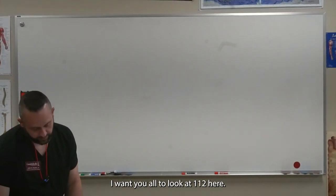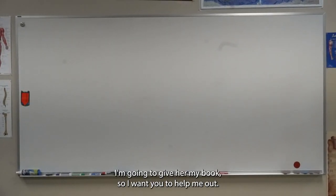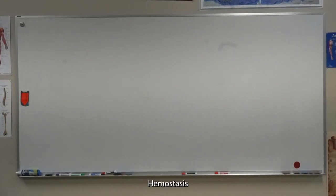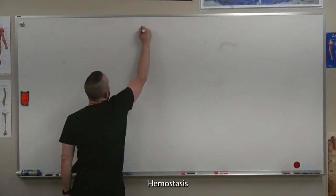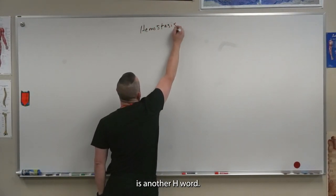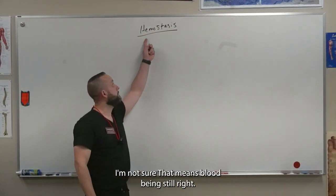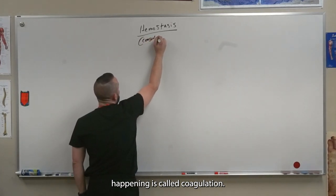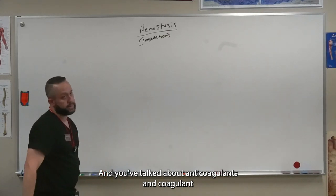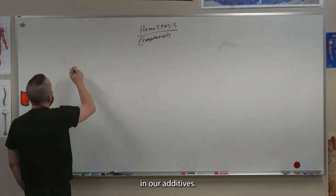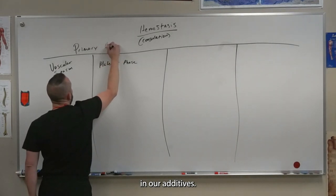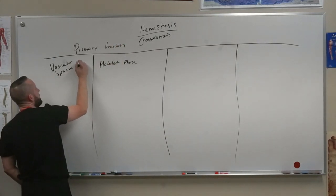I want you all to look at 112 here. I'm going to give her my book, so I want you to help me out. You should be looking at page 111 and 112 for a minute. Hemostasis. There's another H word. Maybe it's already on our list. That means blood being still, right? The process of that happening is called coagulation. And you've talked about anticoagulants and coagulants in our additives. These are phases.